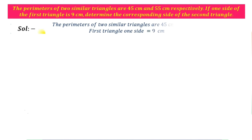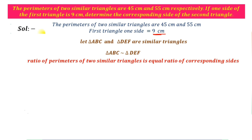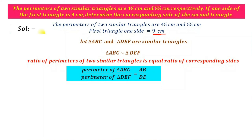Write down: the perimeters of two similar triangles are 45 cm and 55 cm. Let ABC and DEF be similar triangles. So triangle ABC is similar to triangle DEF. The ratio of perimeters of two similar triangles is equal to the ratio of corresponding sides. Perimeter of triangle ABC divided by perimeter of triangle DEF equals AB by DE.